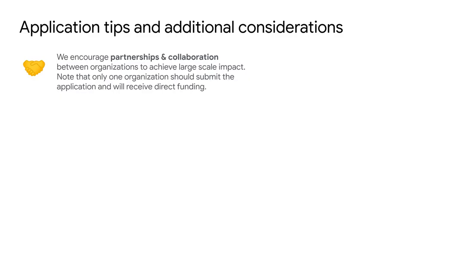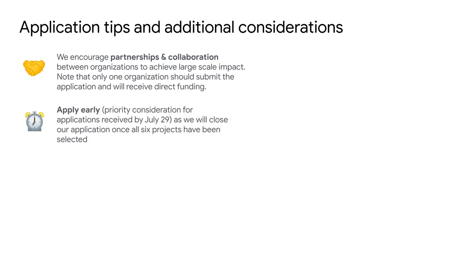Here are some additional considerations. If applicable, we encourage partnerships and collaboration between multiple organizations to achieve large-scale impact. As you're completing the application, consider your organization's strengths and gaps and how you could potentially fill the gaps with partners or other collaborators. Remember that only one organization may be the applicant of record, and if your project is selected to receive funding, the applicant organization will be the recipient of the funding. We strongly recommend that you apply early by July 29th for priority consideration, as submissions will continue to be reviewed on a rolling basis and we will close the application once all recipients have been selected.